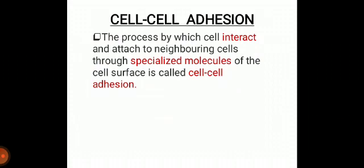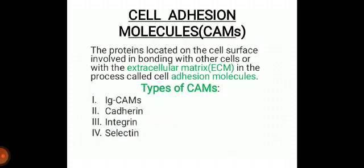Cell-to-cell adhesion is of two types: direct contact and indirect contact. In direct contact, also called cell-to-cell adhesion, a neighboring cell is in immediate contact with another neighboring cell. While in indirect contact, animals usually need the extracellular matrix for stimulation or adhesion. Cell adhesion molecules, also called CAMs, are proteins located on the cell surface involved in bonding with other cells or with the extracellular matrix (ECM). In the process called cell adhesion, CAMs help cells stick to each other and their surroundings.